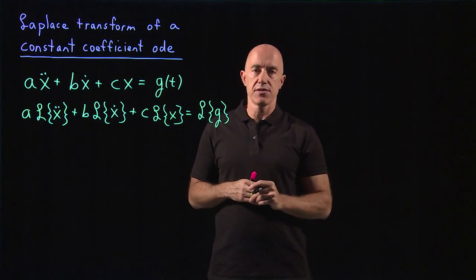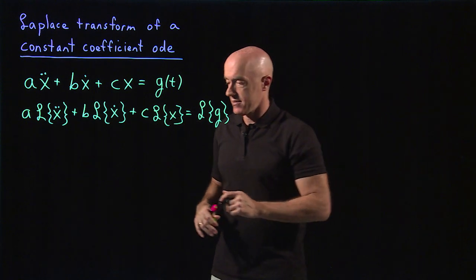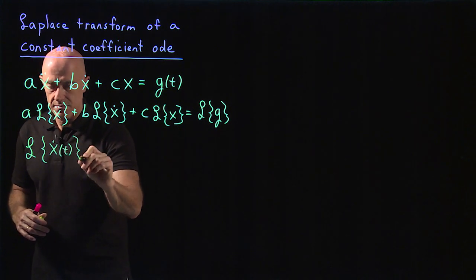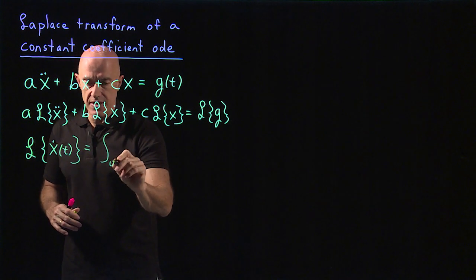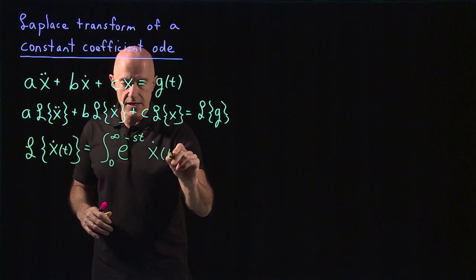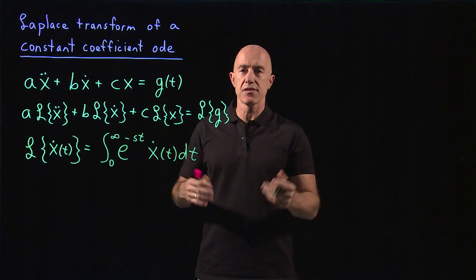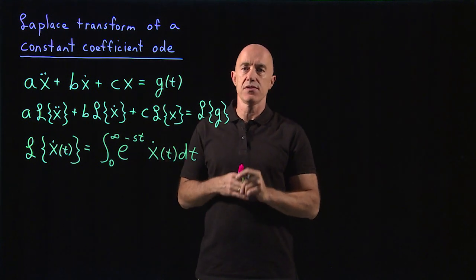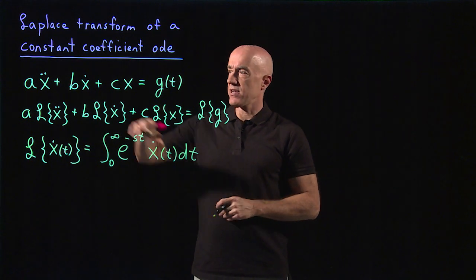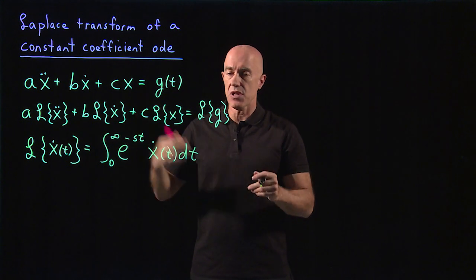To do that, we need to make use of the definition of the Laplace transform. Let's look at the Laplace transform of x dot. The Laplace transform of x dot, which is a function of time, is going to be an integral from 0 to infinity of e to the minus st times x dot of t dt. We need to express this integral in terms of the Laplace transform of x, so that we can solve for capital X of s.